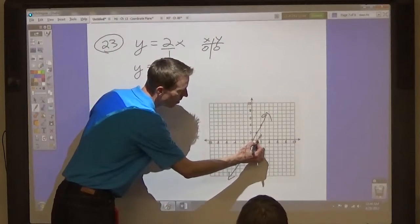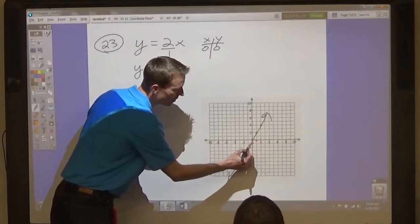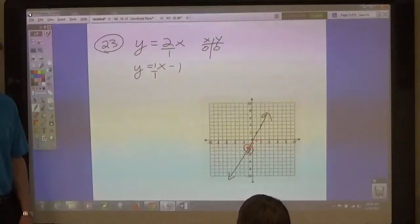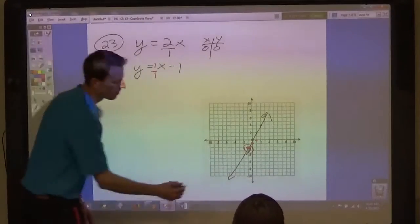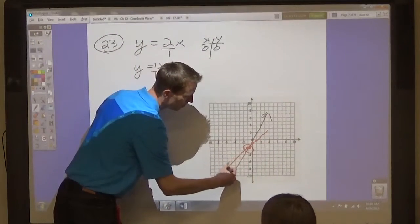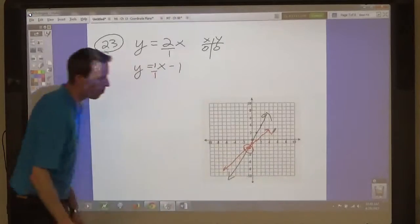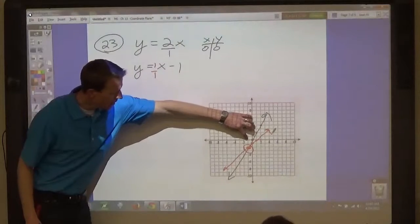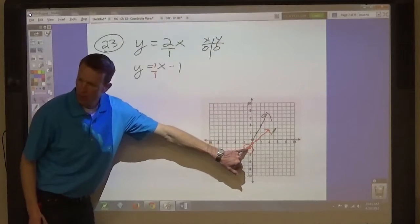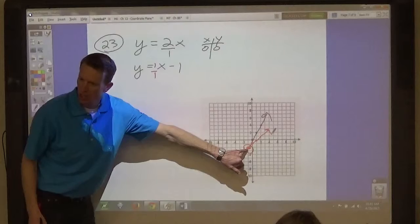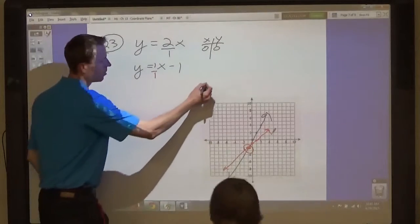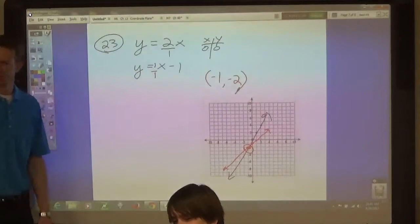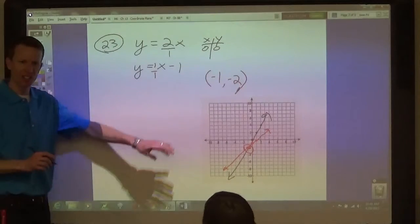So up 1 over 1, down 1, left 1. You see these dots right here? Those are the ones that line up, right? That's where it intersects. So what point is that? Negative 1, negative 2, right? The solution is negative 1, negative 2.